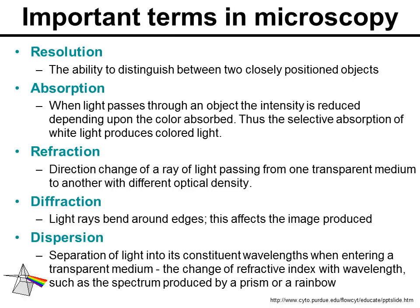The next term is absorption. When light passes through an object, the intensity of that light is reduced depending on the color absorbed. Thus, the selective absorption of white light produces colored light, and we're going to take advantage of that to increase contrast with dyes. Refraction is the change of direction of a ray of light passing from one transparent medium to another with a different optical density, and we'll look at the refractive index and how it is used to increase contrast.